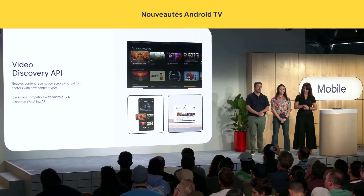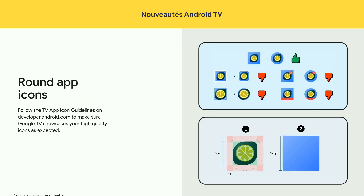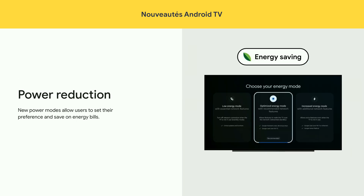We've also made improvements to Android TV. First, a new video discovery API is coming to TV that simplifies the integration that powers one of the most used features on TV. Second, round app icons are now standard. And third, there are new modes to optimize for power consumption.